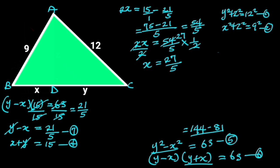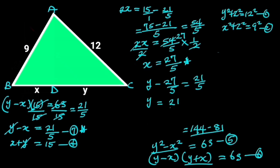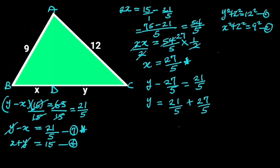To find y, we substitute x equals 27 over 5 into equation 7. It follows that y minus 27 over 5 is equal to 21 over 5. Making y the subject gives y is equal to 21 over 5 plus 27 over 5, which can be written as (21 plus 27) over 5, equal to 48 over 5. So y is equal to 48 over 5.